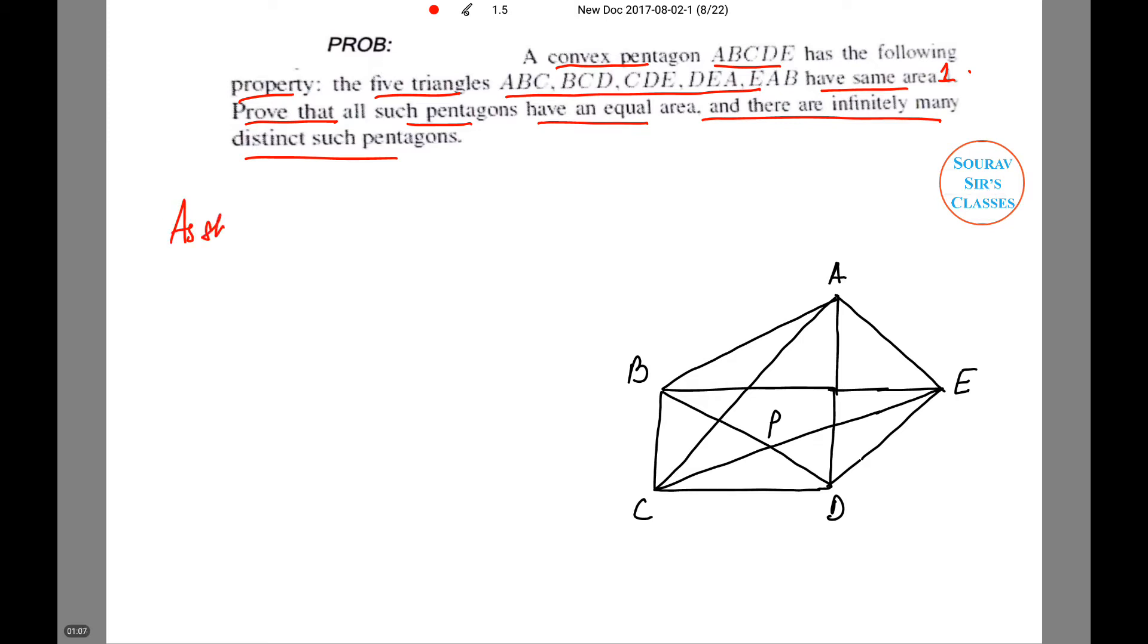As shown in the right-hand diagram, the equality between [EAB] and [CAB] yields or provides us with the result that EC is parallel to AB.